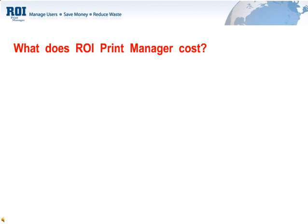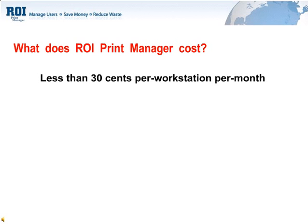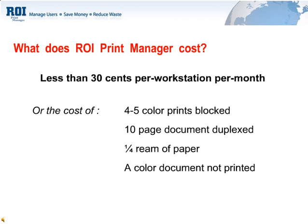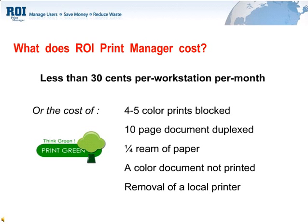ROI Print Manager — can you afford not to have it? Less than 30 cents per workstation per month. Or the cost of maybe 4 to 5 color prints that were blocked and redirected. A user that complied with the pop-up and duplexed a 10-page document. A quarter ream of paper saved as users understand that they're more accountable for their actions. A color document that wasn't printed.